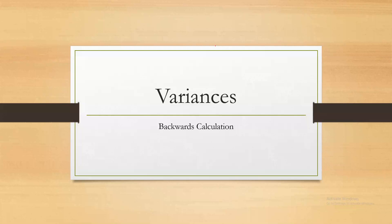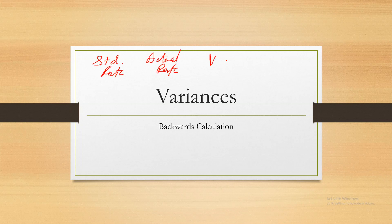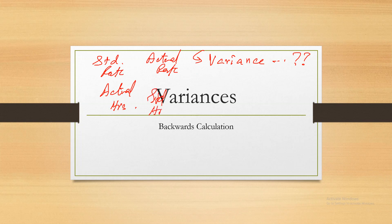Hello everyone, I am Moedama Siddiqui and in this video I will briefly explain the backwards calculation of variances. Normally, we are given the actual rate and the standard rate and we are required to calculate variances. But what if we are given the variance and some other information, and we are required to calculate one of these — actual hours or standard hours? Some instructors refer to questions like these as backward calculations.